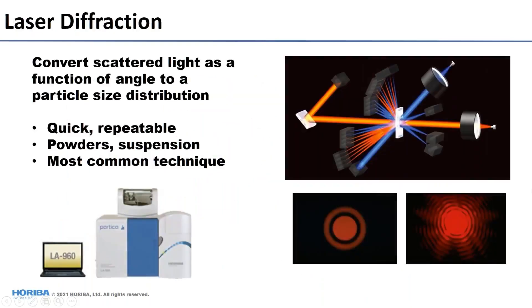Laser diffraction looks at scattered light as a function of angle to convert into a particle size distribution. You have a laser, a sample, and detectors at a number of different angles. As you move from the center out, you'll see scattering as rings or peaks, and interpreting these rings gives us the size distribution. Advantages: it's very fast — you can get a measurement in just a minute or so. It's very repeatable, and you can use it for dry powders, liquid suspensions, and emulsions. It also covers a very wide range of sizes.